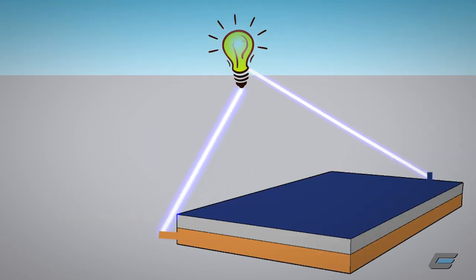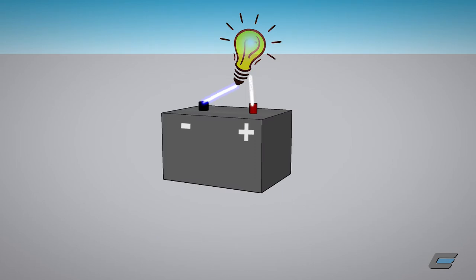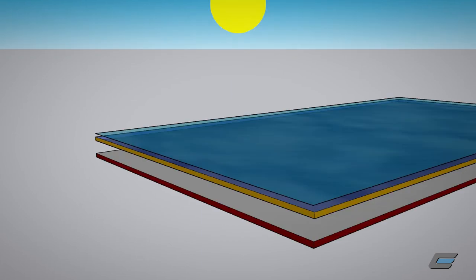Photovoltaic cells have two layers of semiconductors. Similar to a battery, one layer is negatively charged while the other is positive. These layers are protected by two outer shields made from special glass.